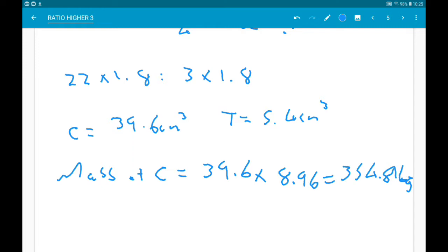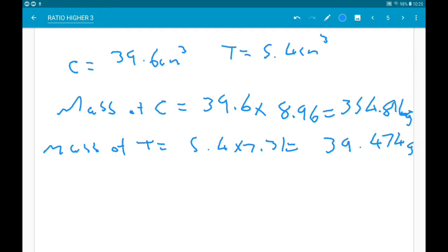Okay, then do the same for the mass of tin. So this time we are doing 5.4 times 7.31. Now that gives us 39.474 grams. So then the total mass is those two added together. So the total mass is 394.29 grams.